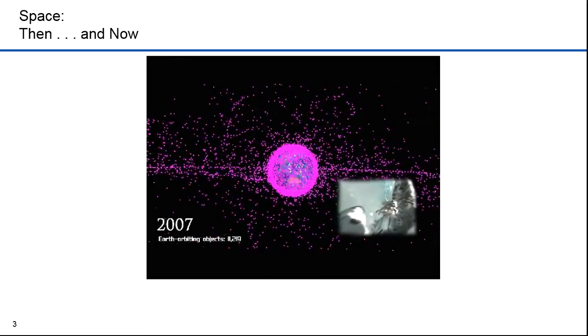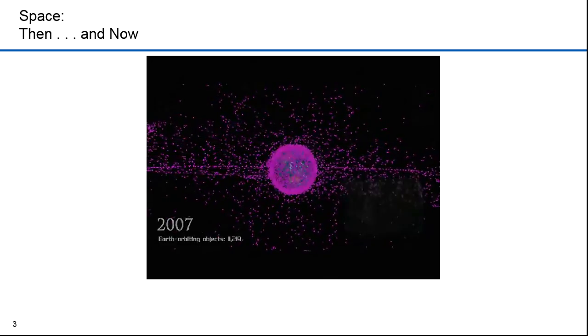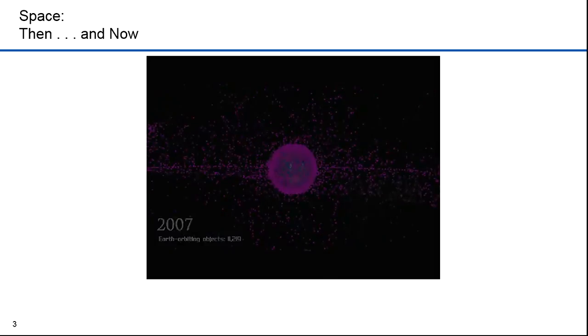By 2007, there were more than 11,000 objects in space. Since 1957, 30,000 objects have been launched. There are now about 19,000 still in orbit. 902 are operational.